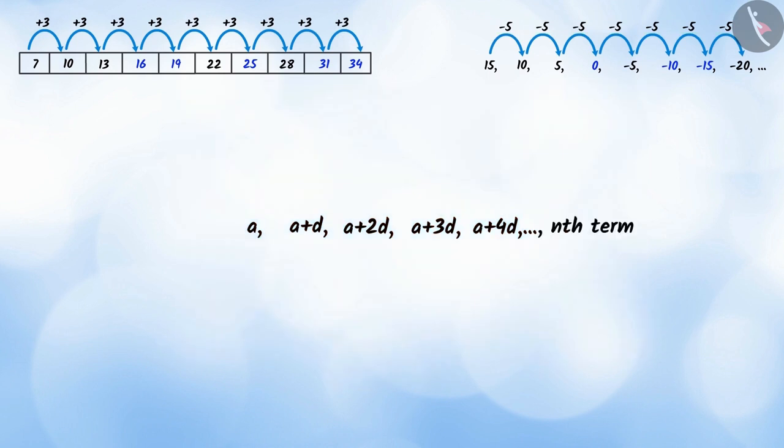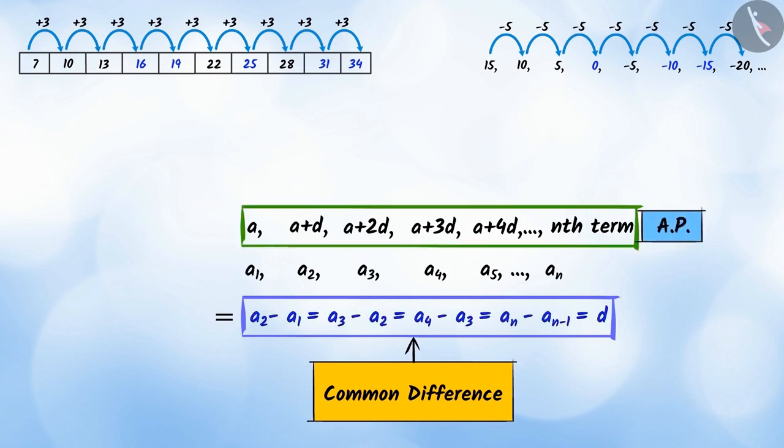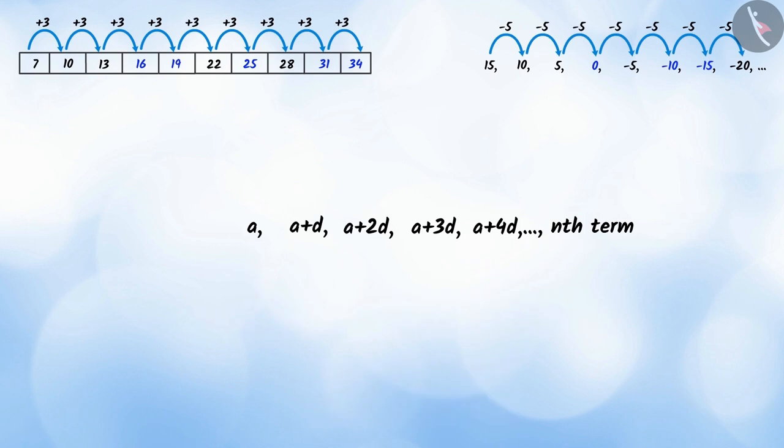If the first term of an arithmetic progression of N terms is written as A1, second term as A2, third term as A3, and moving in the same order, if we write the Nth term as AN and if we write the common difference as D, then it becomes an AP.